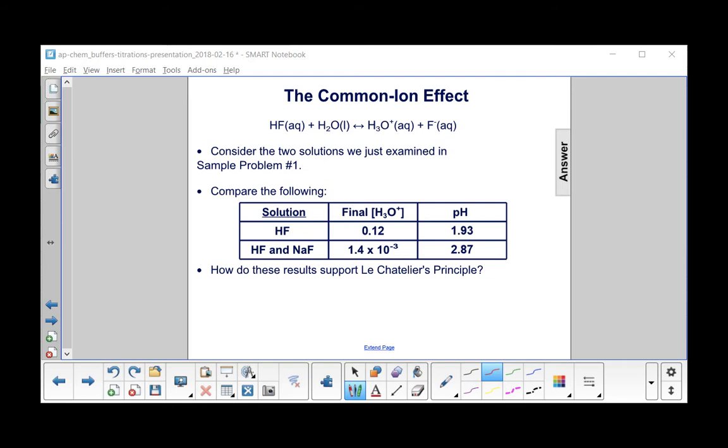Let's compare our results for the two-part problem that we solved in sample problem one. When we just had HF in the solution, we have a pH of 1.93. When we have both HF and NaF in the solution, we have a pH of 2.87. You can see that the concentration of H3O plus from here to here has decreased. Why does that happen?